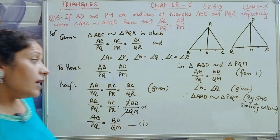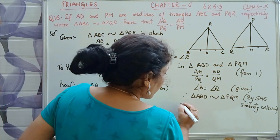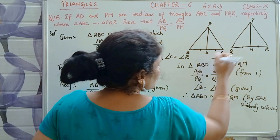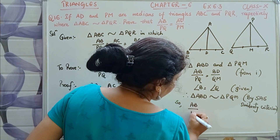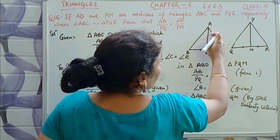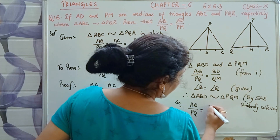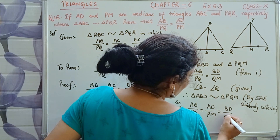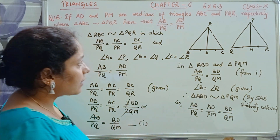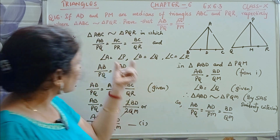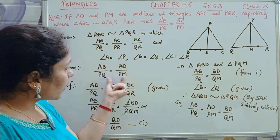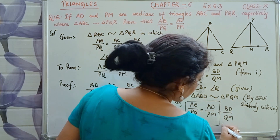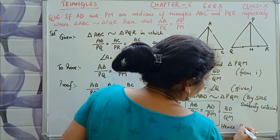Since both triangles are similar, we can write: AB proportionate to PQ equals AD proportionate to PM equals BD proportionate to QM. We can see all three ratios are written. We needed AB/PQ = AD/PM, which we have obtained. Hence proved.